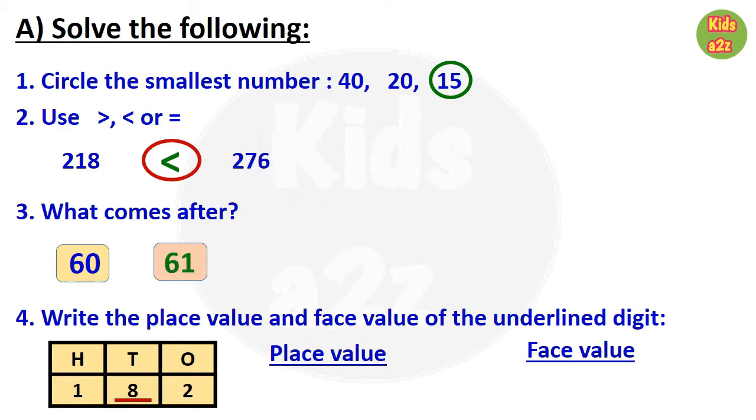For question number 4, kids need to write the place value and face value of the underlined digit. So here we can see that the underline is in the tens column. So the place value is 8 tenths or 80, and face value is 8 itself.